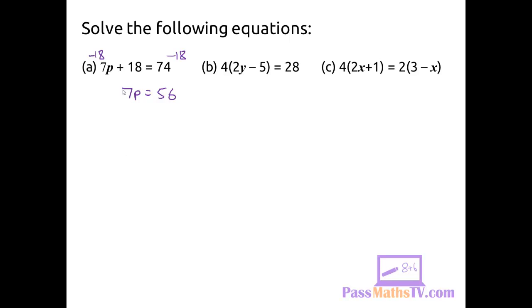So in order to get rid of the 7, I have to divide both sides by 7. I end up with p on its own and 8 on the right-hand side, so that's the solution.